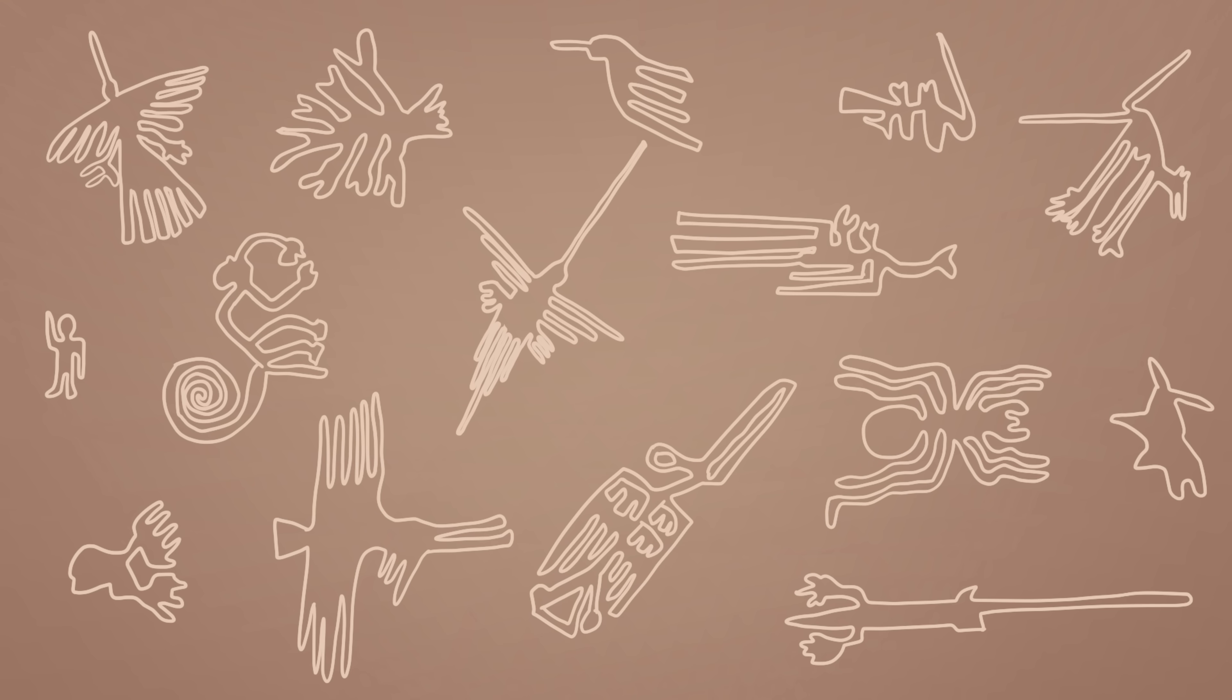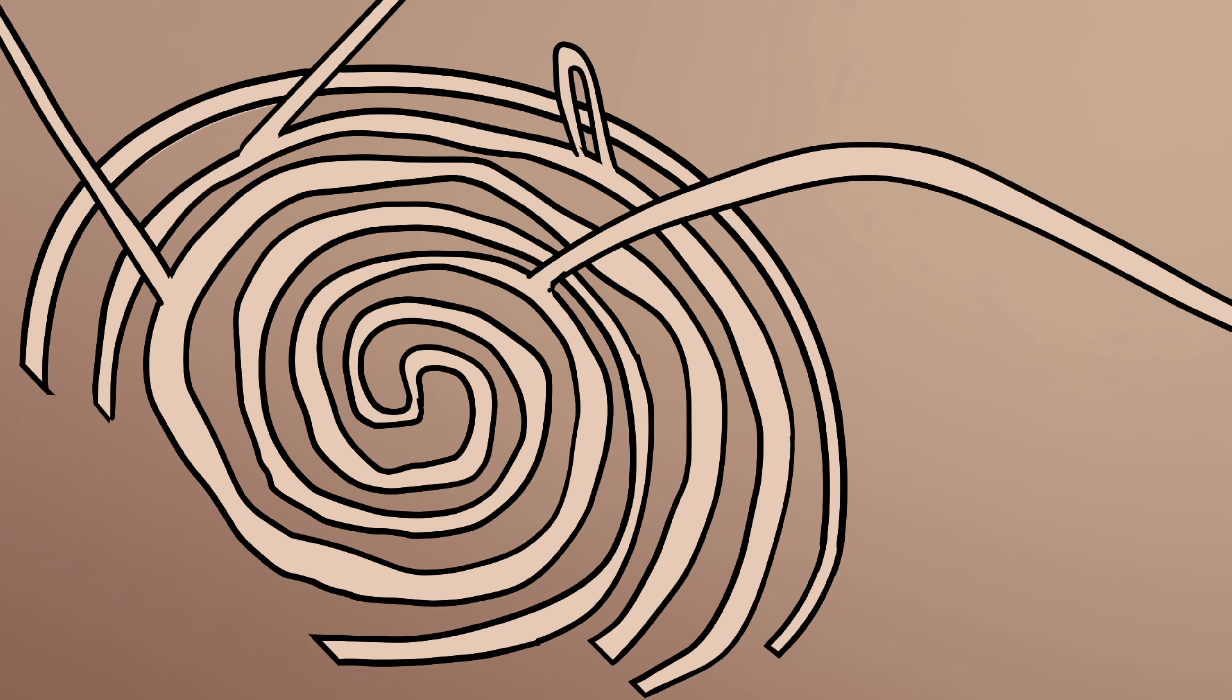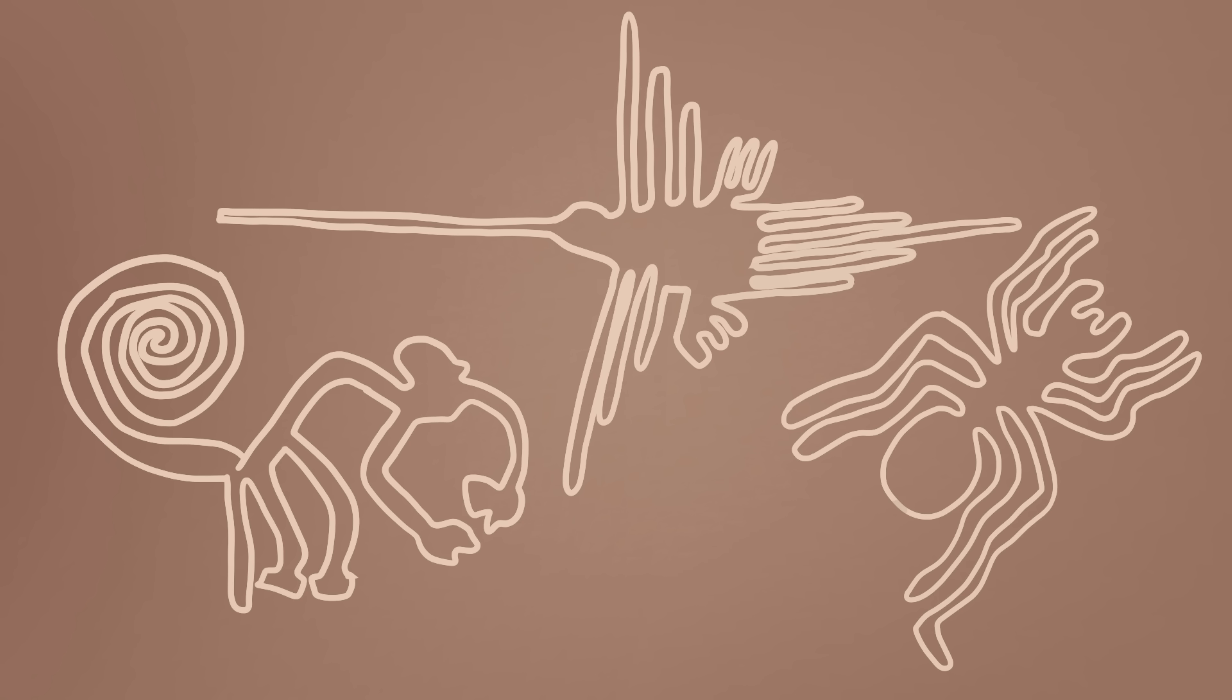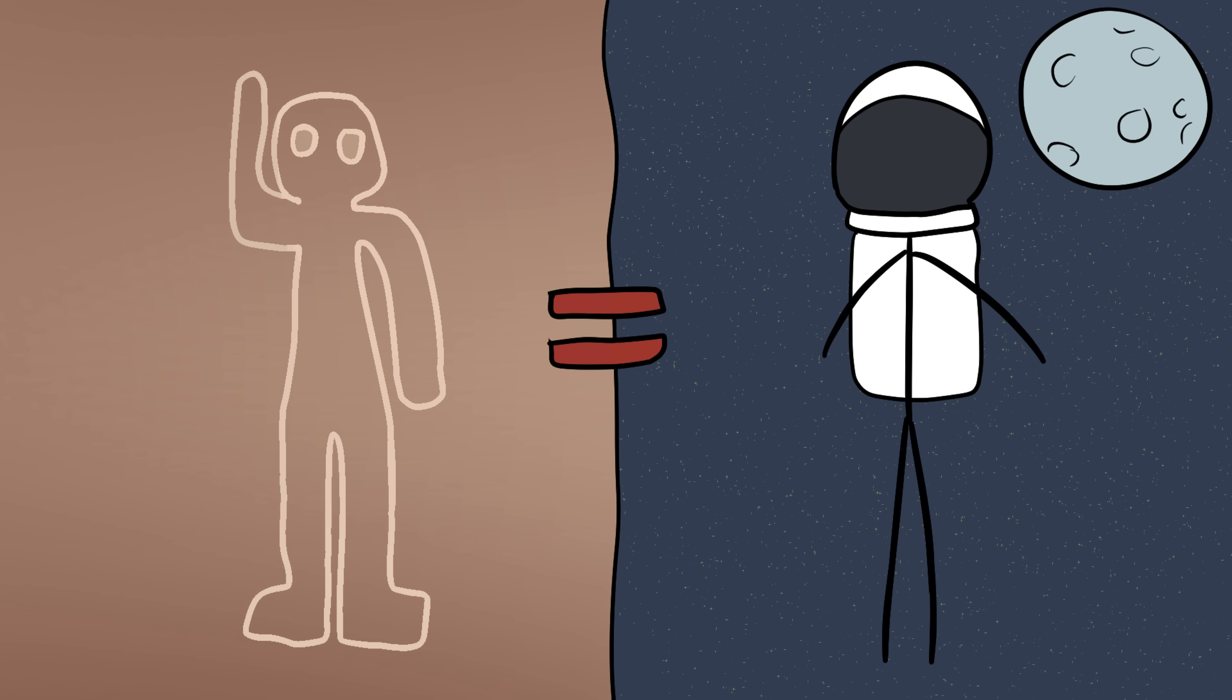In the deserts of Peru lie the Nazca Lines, enormous geoglyphs carved into the ground, stretching across miles of barren landscape. Some are simple shapes like spirals and straight paths. Others are massive figures, a monkey, a hummingbird, a spider, even something that looks like an astronaut with a round head and raised hand.